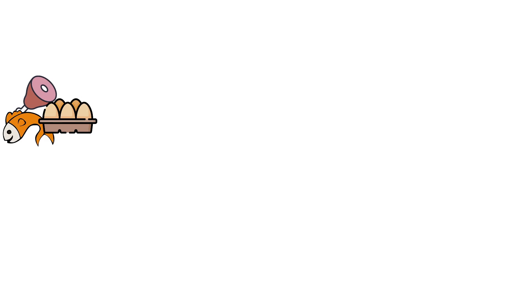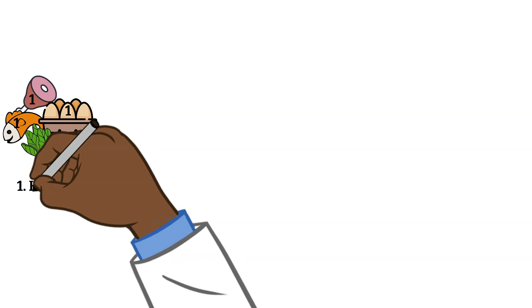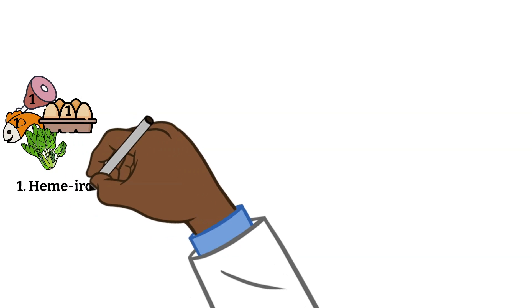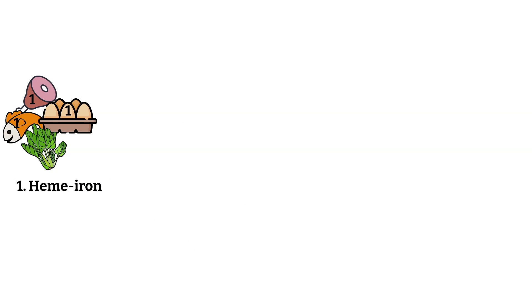Iron is a mineral or compound found in foods like meats, fish, eggs, spinach, and certain cereals. There are two types of iron we get from foods. First, we have heme iron that comes from the meat, seafood, and poultry sources. Heme iron is simply iron bound to a protein called heme.